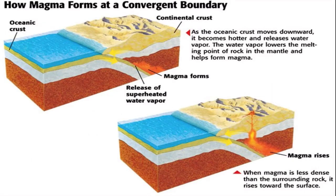At convergent boundaries, volcanoes only form when there is an interaction with oceanic crust. When continental and continental crust collide, we get folded mountains. At these convergent boundaries, the oceanic crust subducts under the continental crust because it is denser. When that happens, the friction of the subducting plate heats up the nearby asthenosphere. In addition, water from sediments in oceanic crust turns to steam and lowers the melting point of the rock. These two effects make it easier for the rock to melt despite the pressure, and the less dense magma gradually floats up to form volcanoes.